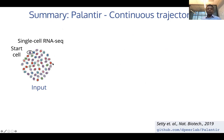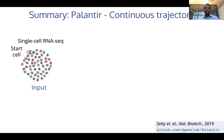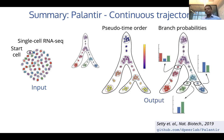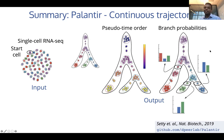As a summary of the algorithm: we start with a series of single-cell profiles representing a particular differentiating system. We assume we know the start cell — though more recently we have developed approaches where we don't need to know the start cell. Then, using this information, we first derive a pseudotime order, and for each cell we compute the probability of reaching the different terminal states, from which we compute the differentiation potential or a measure of plasticity of the cells.